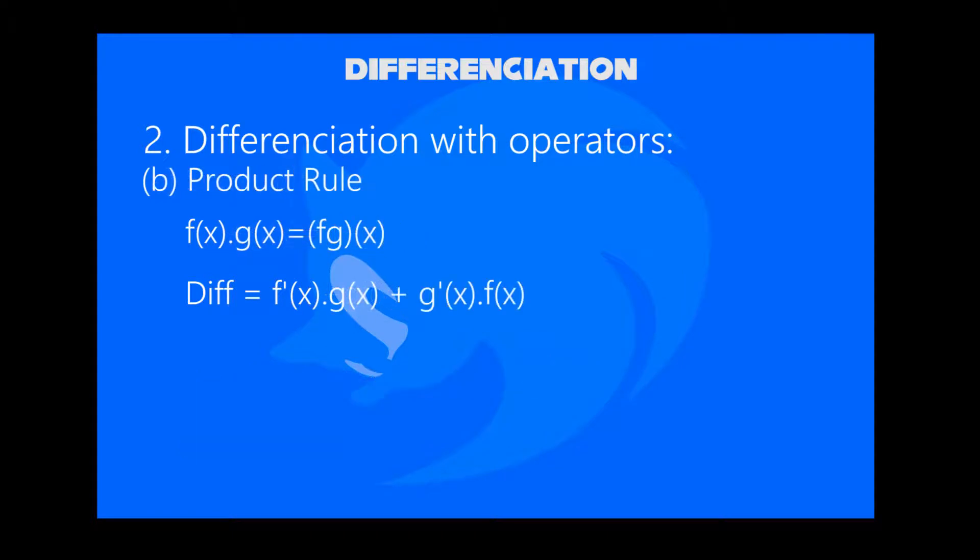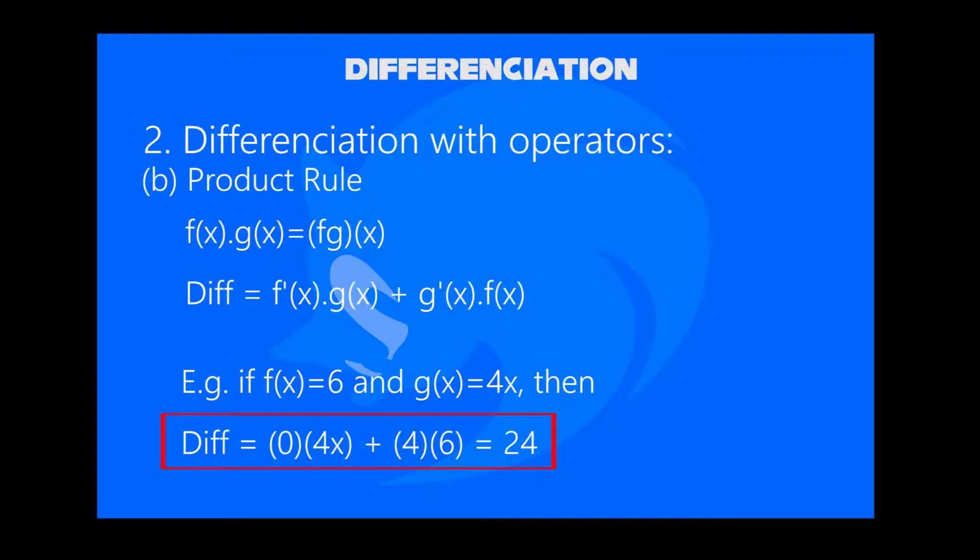Next rule is the product rule, where f(x) · g(x) = (fg)(x). To differentiate the product rule, one function is differentiated while the other stays constant, then vice versa. The formula is f'(x) · g(x) + g'(x) · f(x). For example, if f(x) = 6 and g(x) = 4x, then the answer is 24.